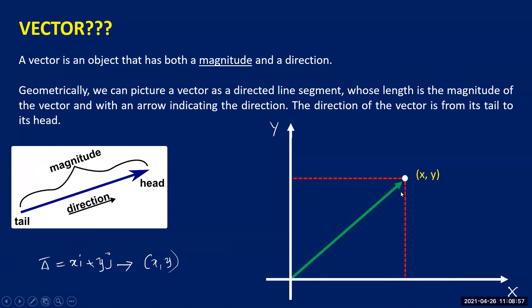To represent this vector, we join the origin and this point — the green-colored line is the vector x comma y. A vector has both magnitude and direction. The direction is forward, and the magnitude is the length between the origin (0,0) and point A, which equals the square root of x squared plus y squared.